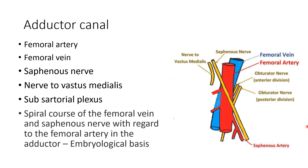The femoral artery enters at the apex of the femoral triangle and travels through the adductor canal for its entire length, lying between the saphenous nerve and the femoral vein. It leaves the canal by passing through the adductor hiatus. In the canal, the femoral artery gives muscular branches, and before it leaves, it gives the descending genicular branch.